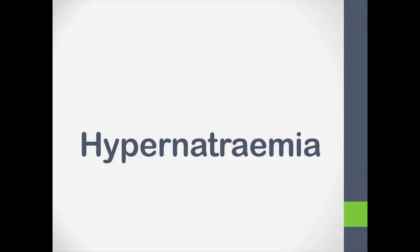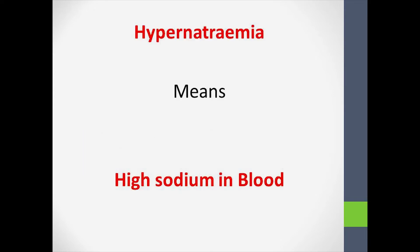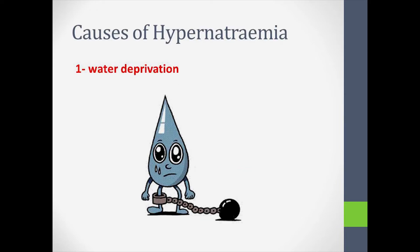Our subject today is about hypernatremia — a quick and simple explanation. Hyper means high, natremia means sodium in the blood, so hypernatremia means high sodium in the blood. The causes of hypernatremia: first is water deprivation, second is loss of water in excess of electrolytes.